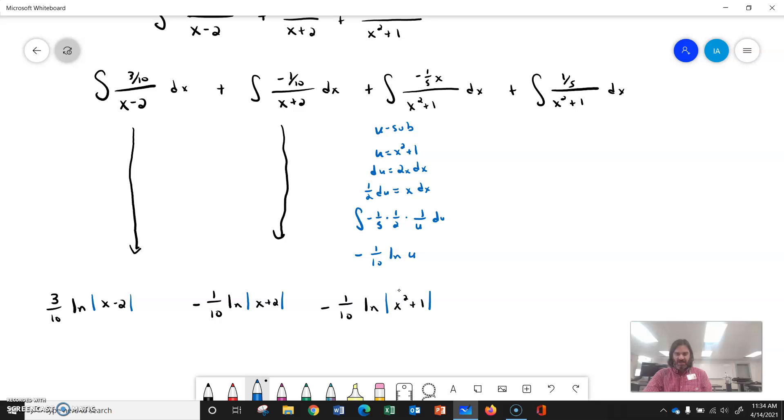Okay, and then I got one more fraction over here. 1 fifth over x squared plus 1. This is the trig inverse that we keep dealing with. So this gives me, this is the rule that we usually have is, I'll write it down so you know where it comes from,